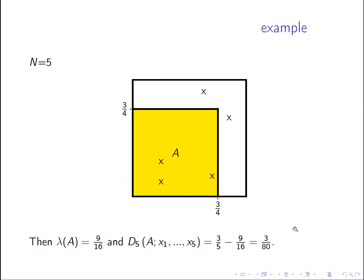For example, with N=5 points and a yellow rectangle A, 3 out of 5 points lie in the rectangle. The first part is 3/5. The rectangle has dimensions 3/4 by 3/4, so its Lebesgue measure is 9/16. Therefore D_5(A) = 3/5 − 9/16 = 3/80. This is an example of the definition D_N(A; x_1,...,x_N).